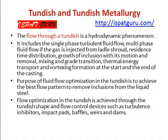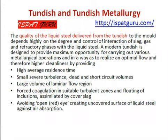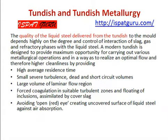Flow optimization in the tundish is achieved through the tundish shape and flow control devices such as turbulence inhibitors, impact pads, baffles, weirs, and dams. The quality of the tundish steel delivered to the mold depends highly on the delivery and control of interaction of slag, gas, and refractory phases with the tundish steel. A modern tundish is designed to provide maximum opportunity for metallurgical operations and to realize optimal flow for higher cleanliness by providing higher average residence time, minimized dead and short-circuit volumes, large volumes of plug flow regions, controlled turbulent zones for inclusion agglomeration, and protection of the tundish steel surface against air absorption.